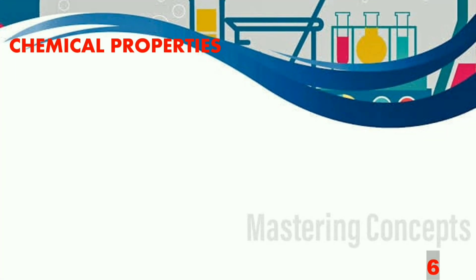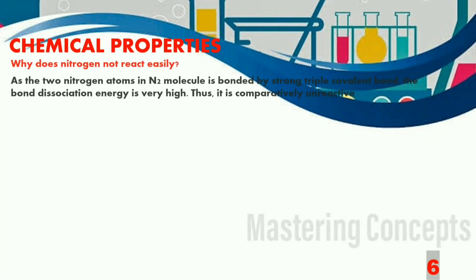Let us now learn about the chemical properties of nitrogen. Why does nitrogen not react easily? You must remember that nitrogen gas is inert in nature. That means it is unreactive like helium or krypton or argon. This is because the two atoms of the nitrogen molecule are bonded by a very strong triple covalent bond and the bond dissociation energy is extremely high. Thus it is comparatively unreactive.